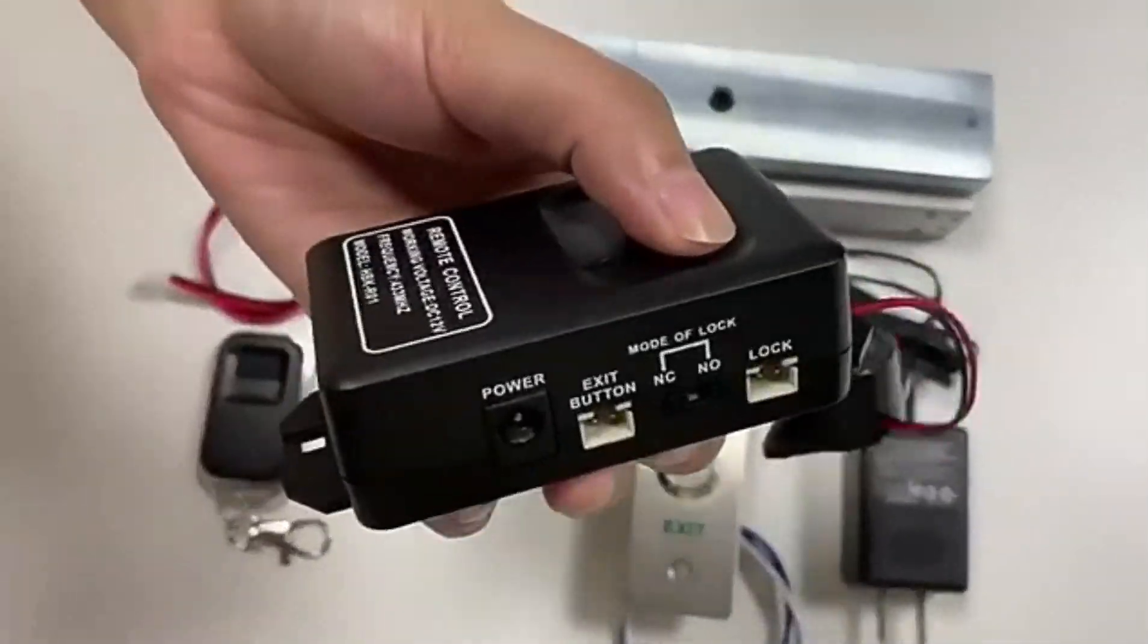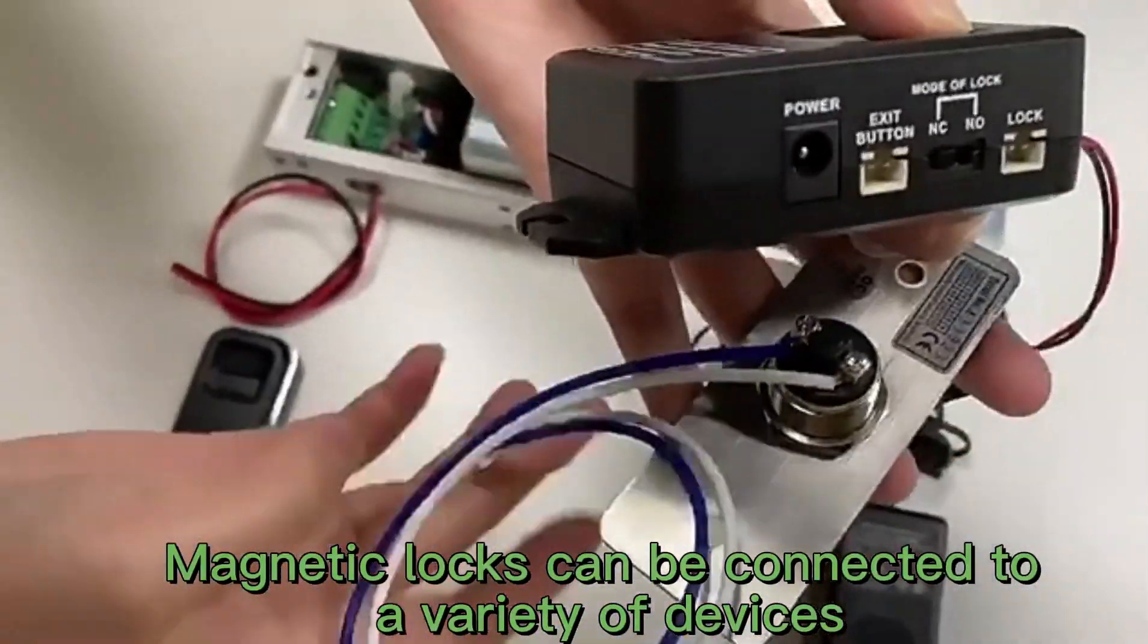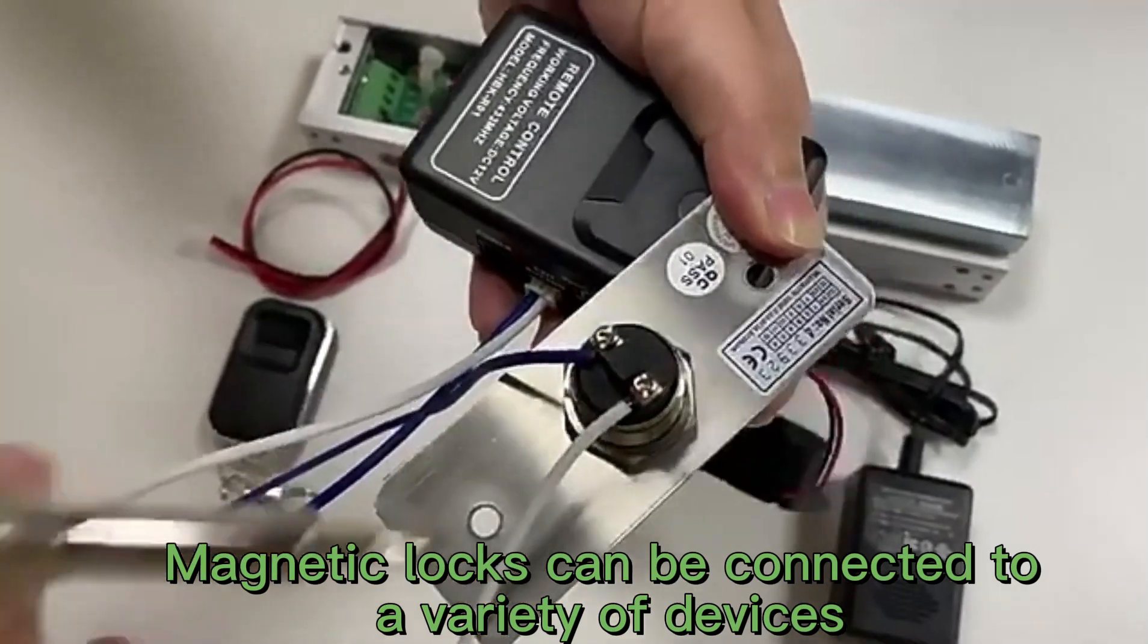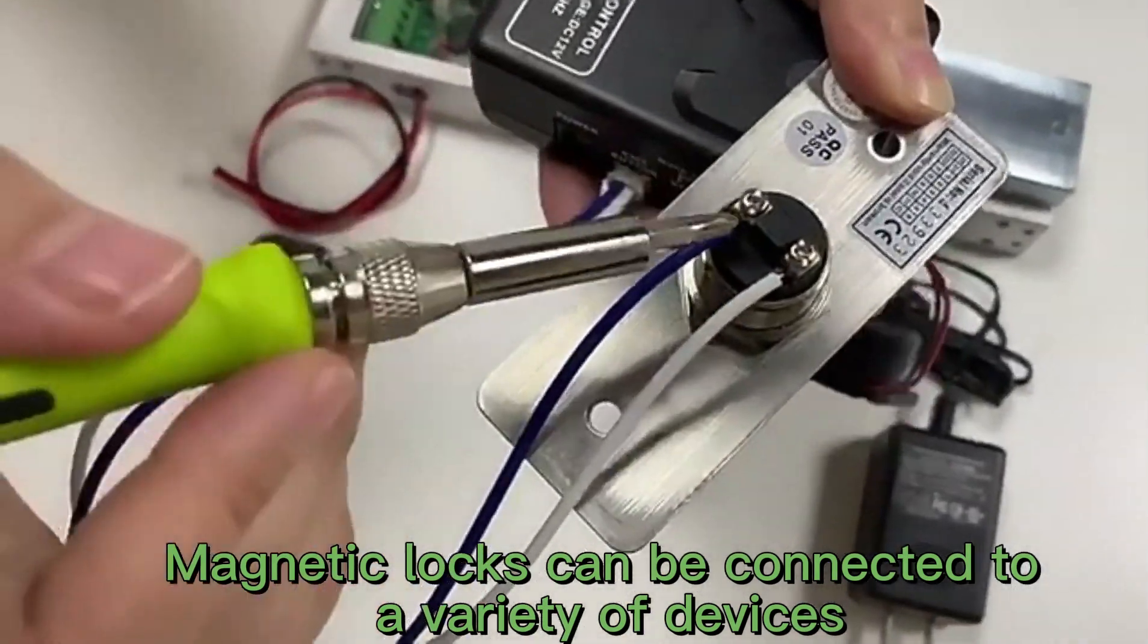Firstly, this part is used to connect the exit button. We use the white and blue JST 2-pin cable. Grab the white wire to connect to the N/O terminal of the exit button, and grab the blue wire connected to the COM terminal.